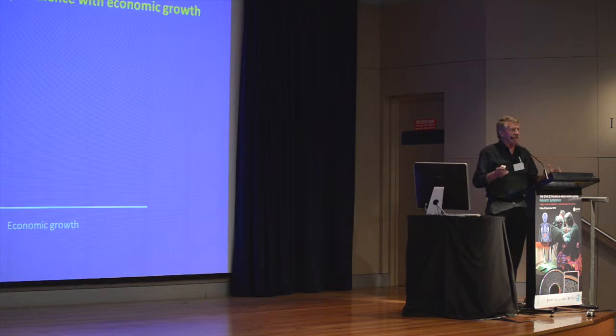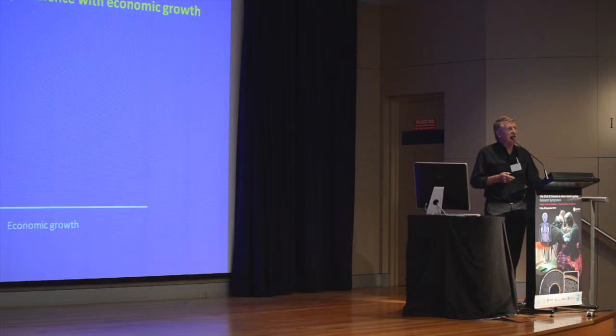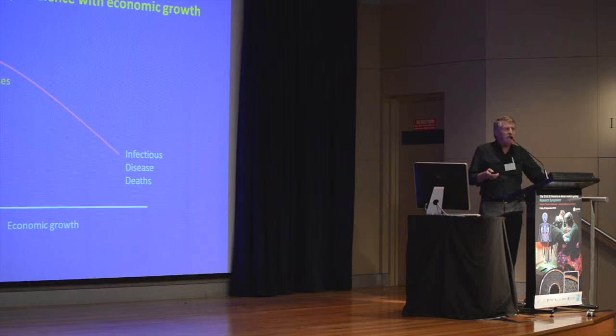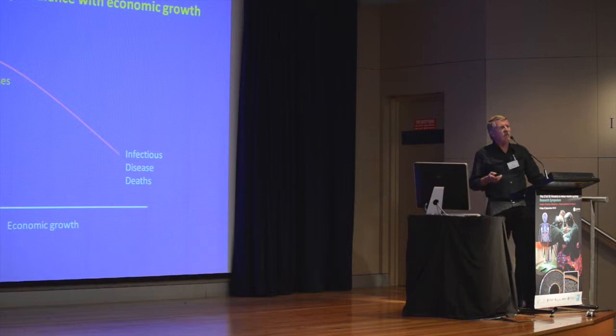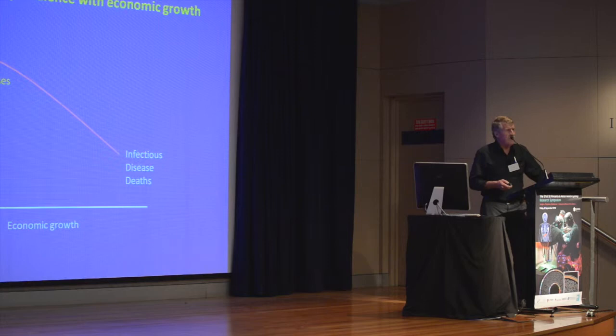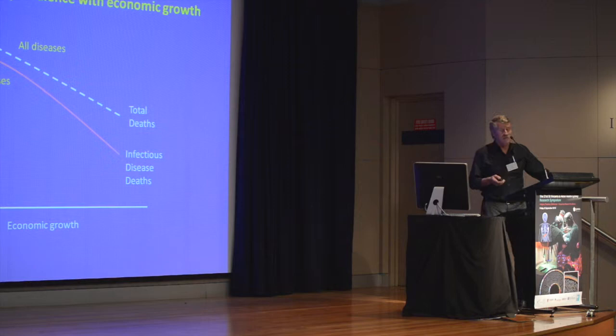The big picture includes the economic environment as well as the social and political environment — in particular, the system of economic growth we live under. You've got a drop in acute and infectious diseases historically from around the start of the Industrial Revolution, though with new infectious diseases cropping up. The death rate from all diseases has gone down dramatically and we've increased our longevity by 100% over the last 50 to 100 years.